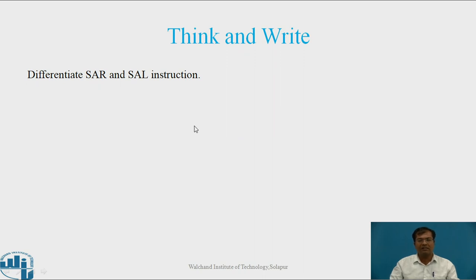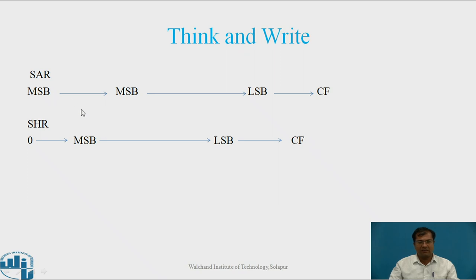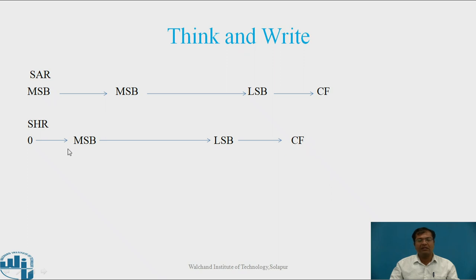Let us see the answer. SAR works by shifting the MSB content to its next right position bit by bit, the LSB is moved to CF, and the new MSB equals the old MSB. In SHR, bits also shift right and the LSB is copied to CF, but here the MSB is updated as 0. The key difference: in SAR the new MSB equals the old MSB, while in SHR the MSB is updated as 0.